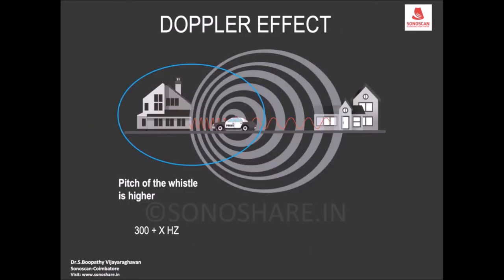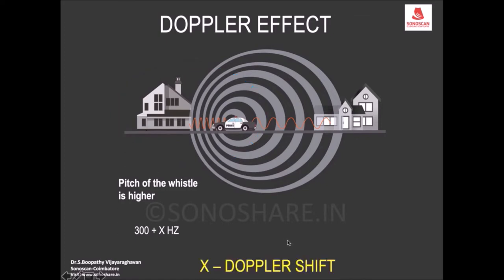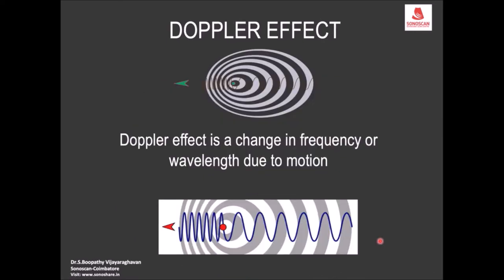By the railway track, as the train or the car with the horn approaches you, you feel that the pitch of the whistle or the horn rises, and it suddenly drops when the car crosses you. As the vehicle moves, the frequency increases — that is called the Doppler shift: a change in frequency or wavelength due to motion.